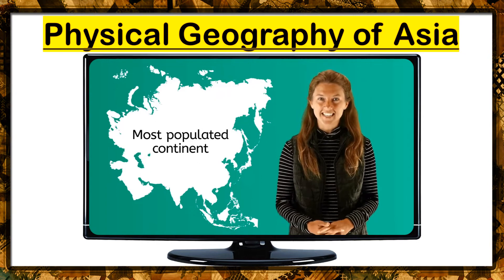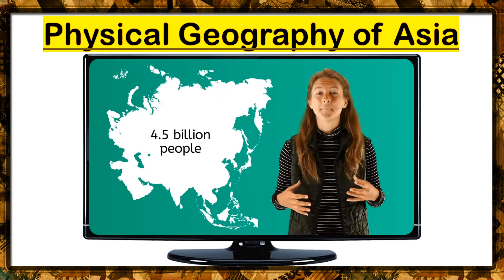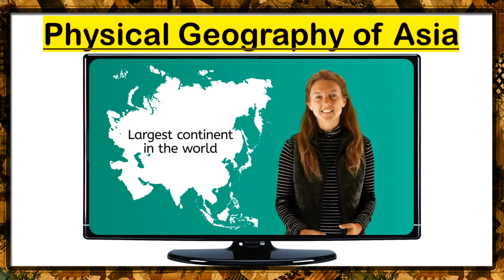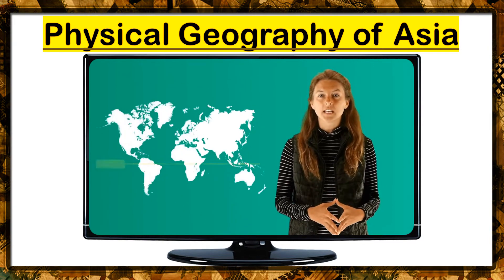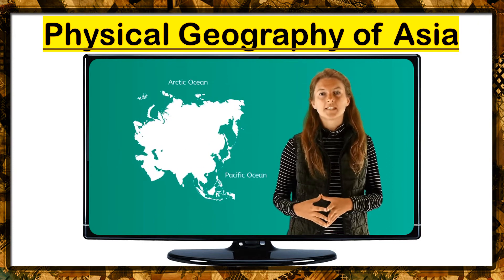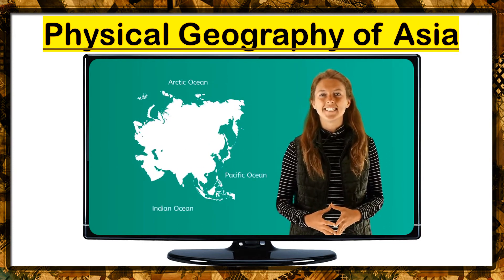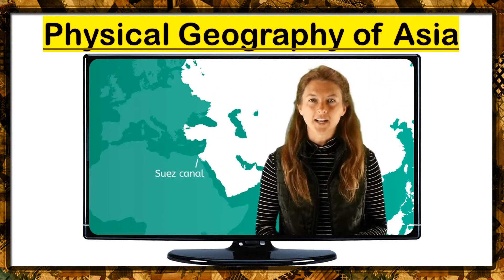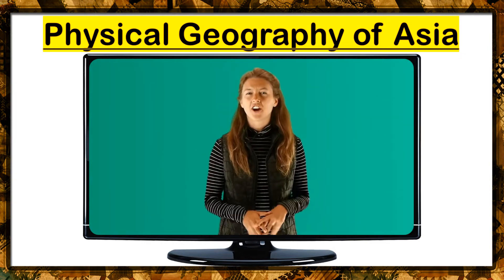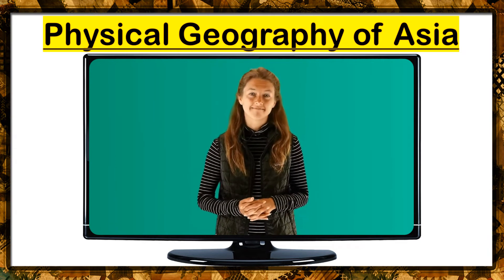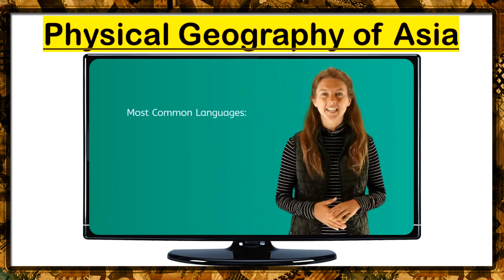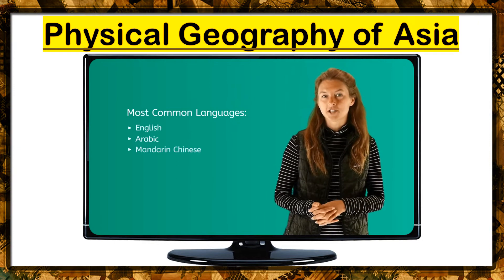Asia is the most populated continent in the world, with over four and a half billion people living in it. It is also the largest continent in the world. Asia is located mostly in the northern and eastern hemispheres, surrounded by the Arctic Ocean to the north, the Pacific Ocean to the east, and the Indian Ocean to the south. The Suez Canal separates Asia from Africa, and the Black Sea separates it from Europe. There are hundreds of languages spoken in Asia — India alone has 30 official languages. The most common languages spoken in Asia are English, Arabic, and Mandarin Chinese.